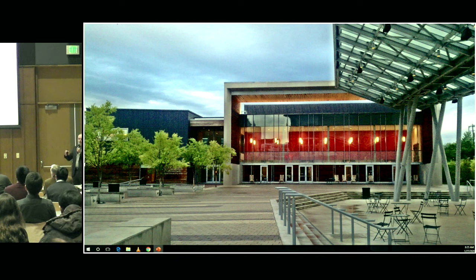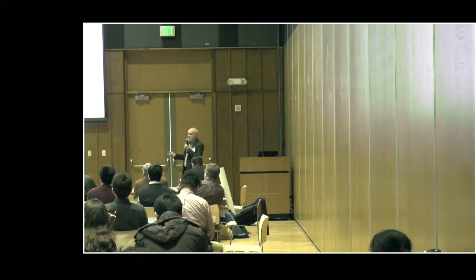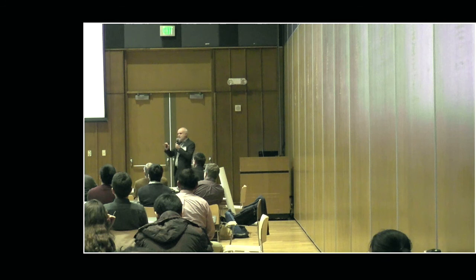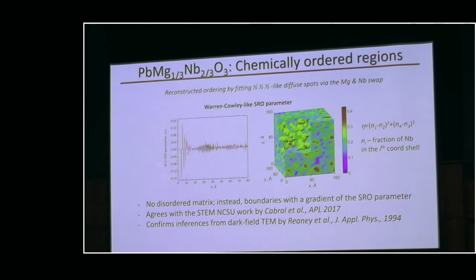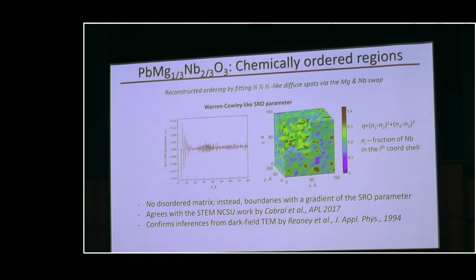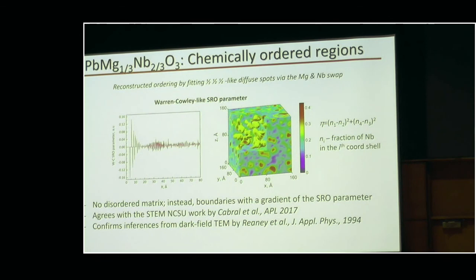We devised a local ordering metric to look at how this ordering is distributed spatially — based on considering for each of the B-site atoms, magnesium and niobium, its chemistry in the fourth successive B-site coordination shells. Looking at the three-dimensional distribution of this metric, it's clear that the distribution is continuous. There are no chemically ordered regions in a disordered matrix and no disordered matrix altogether. We see regions of strong ordering which appear as fluctuations on top of an otherwise continuously varying background — like fluctuations of ordering quenched from high temperature, or very wide antiphase boundaries as seen near order-disorder transitions in metals.